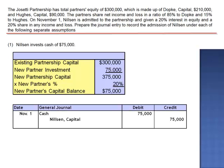This is the balance in Nilsen's capital account. Even though we're debiting and crediting two separate accounts for $75,000, Nilsen's capital account is not being credited for the cash amount. Nilsen's capital is being credited for the portion of the partnership that Nilsen now owns: $375,000 multiplied by 20%, which just happens to be $75,000, the same as Nilsen's investment.